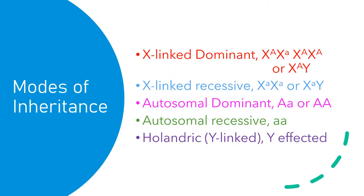Modes of inheritance. The different modes of inheritance that I'll be going over are X-linked dominant, X-linked recessive, autosomal dominant, autosomal recessive, and holandric or Y-linked. To be able to get the correct phenotypes — observable characteristics resulting from the individual's genotype — we have to have the correct genotypes for these modes of inheritance, which I wrote out for you viewers.